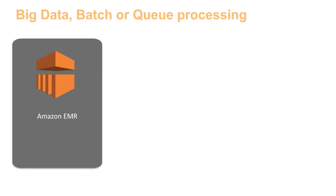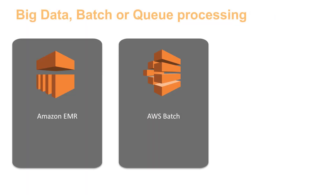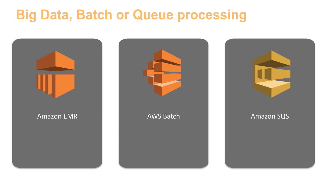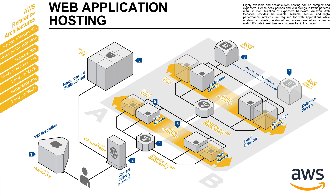If your job is time critical, the instance must be automatically replaced without human intervention and it should be transparent to your users. That means if it's big data, batch processing, or queue processing, the job should automatically restart on a different instance as soon as possible. If it's a website, your users should be none the wiser, with your load balancer automatically sending them to a different instance.